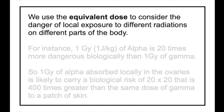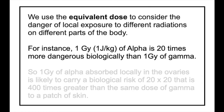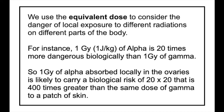We use the equivalent dose in Sieverts to consider the danger of local, low-level exposure to different radiations on different parts of the body. For example, one Grey of alpha is 20 times more dangerous biologically than one Grey of gamma. And the risk to the ovaries is about 20 times greater than that to a patch of skin. So if that patch of skin received gamma radiation and the ovaries received alpha radiation with the same number of Grays, the total biological risk and therefore the equivalent dose in Sieverts would be 20 times 20 — that's 400 times greater.